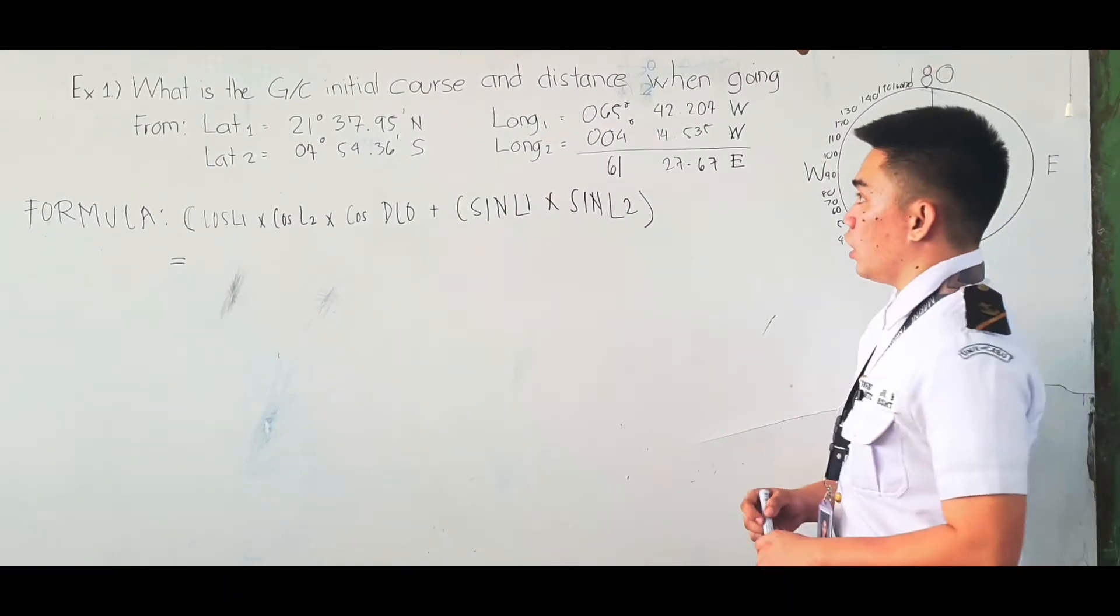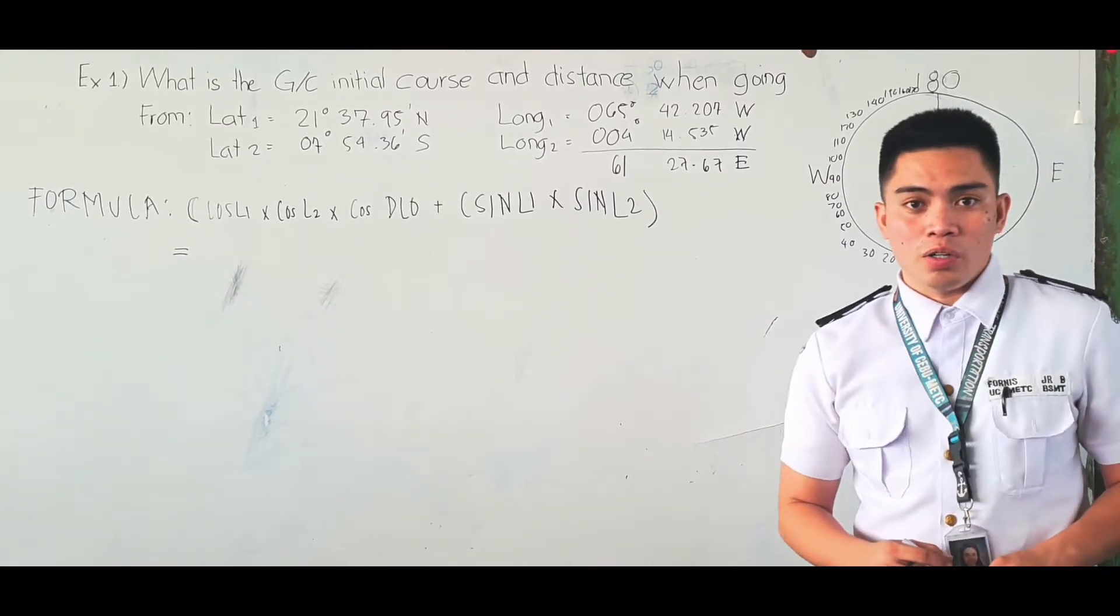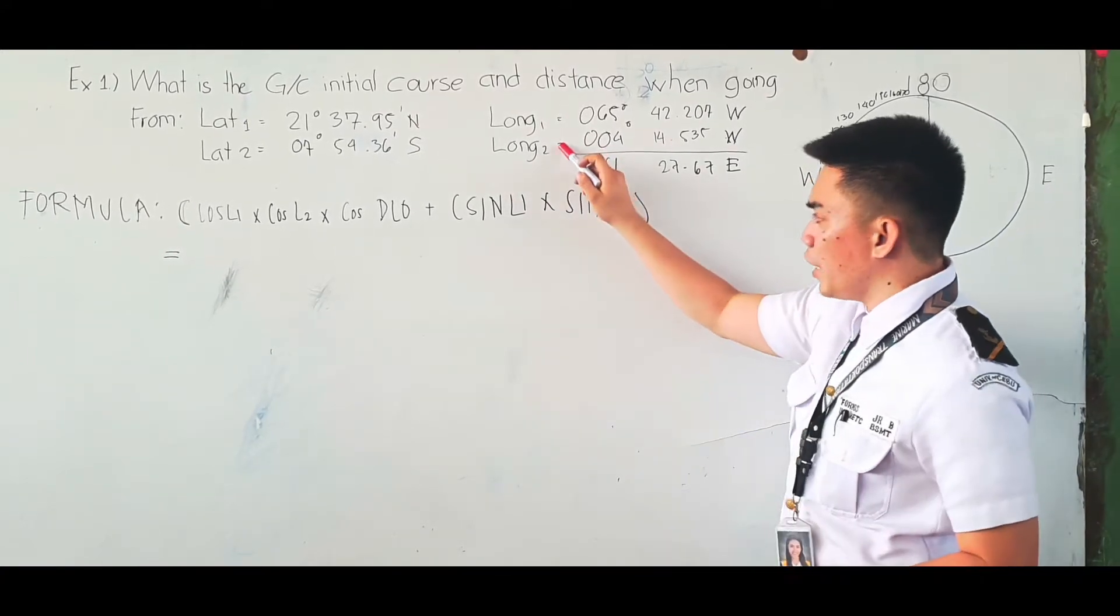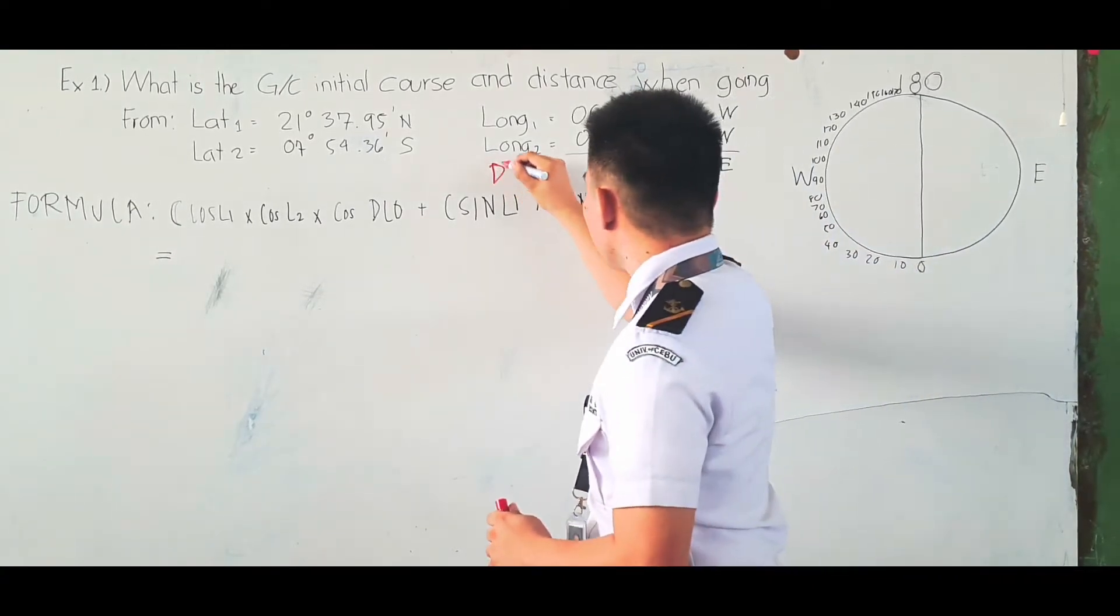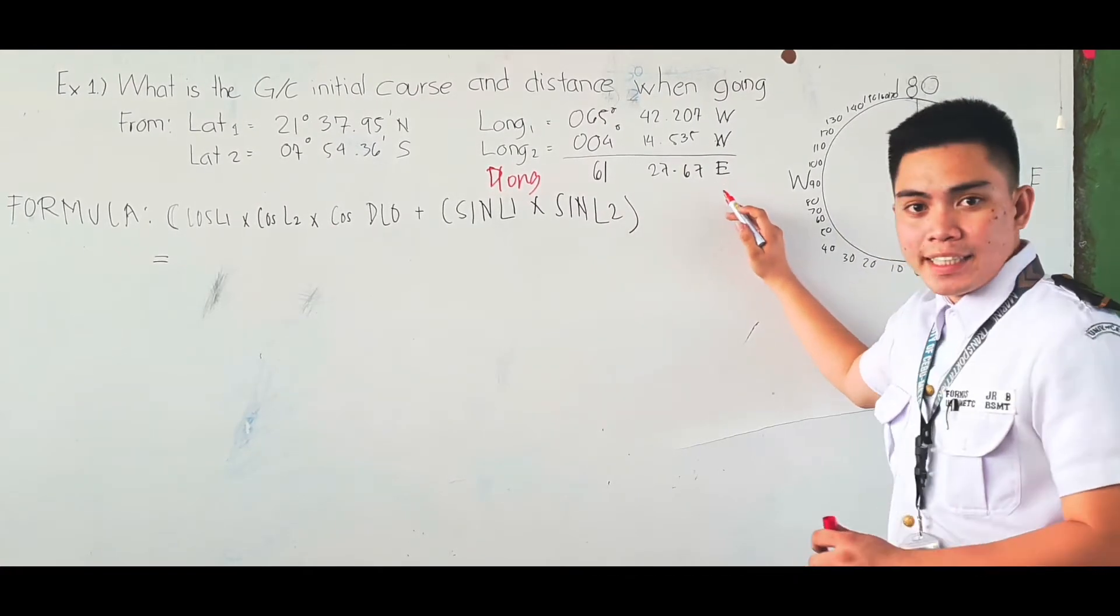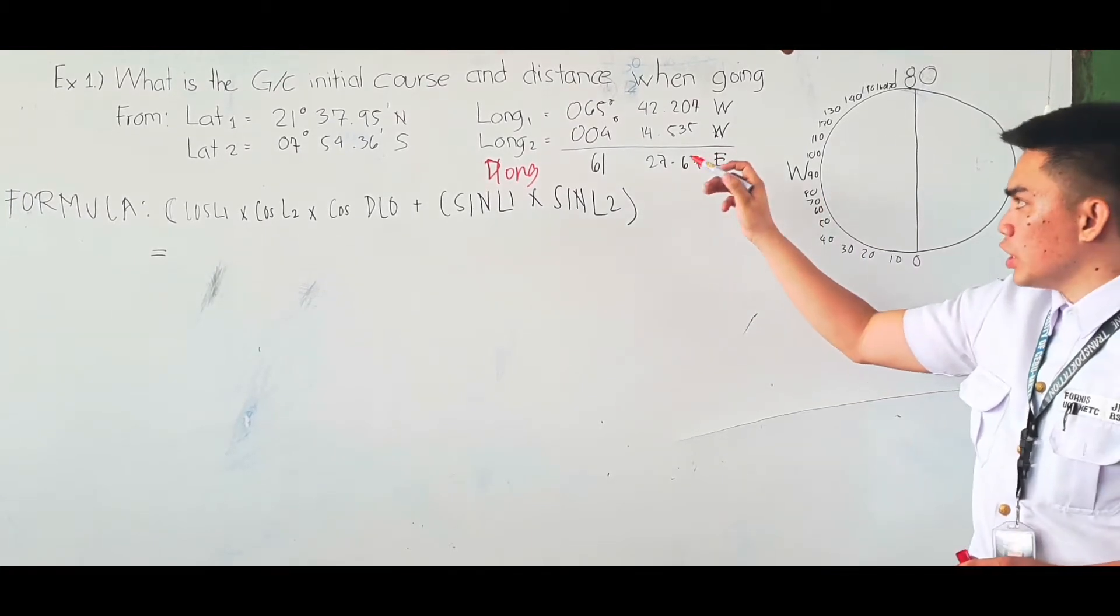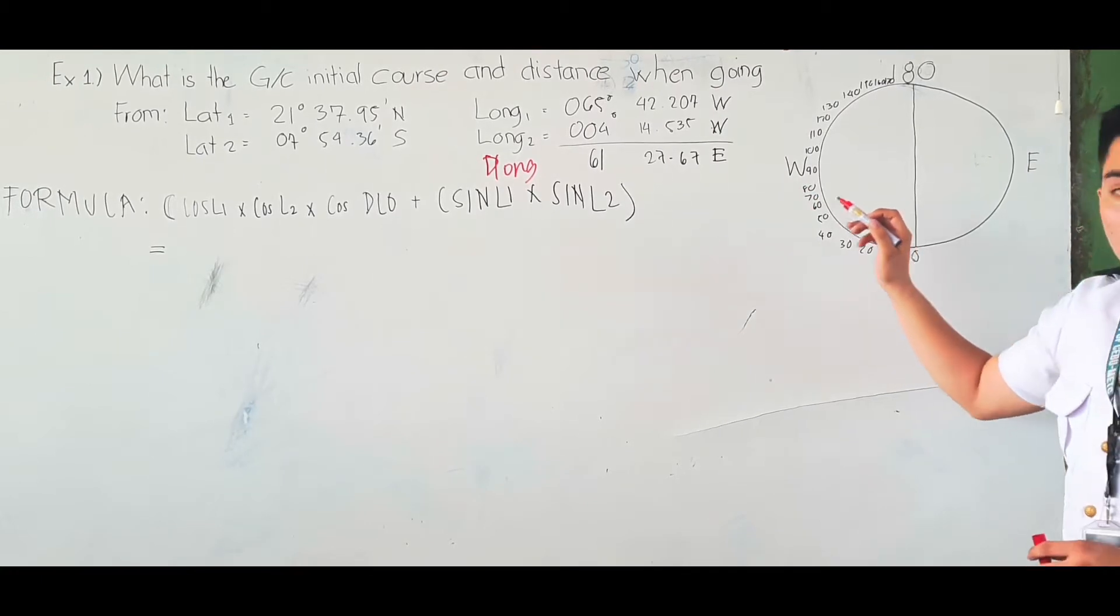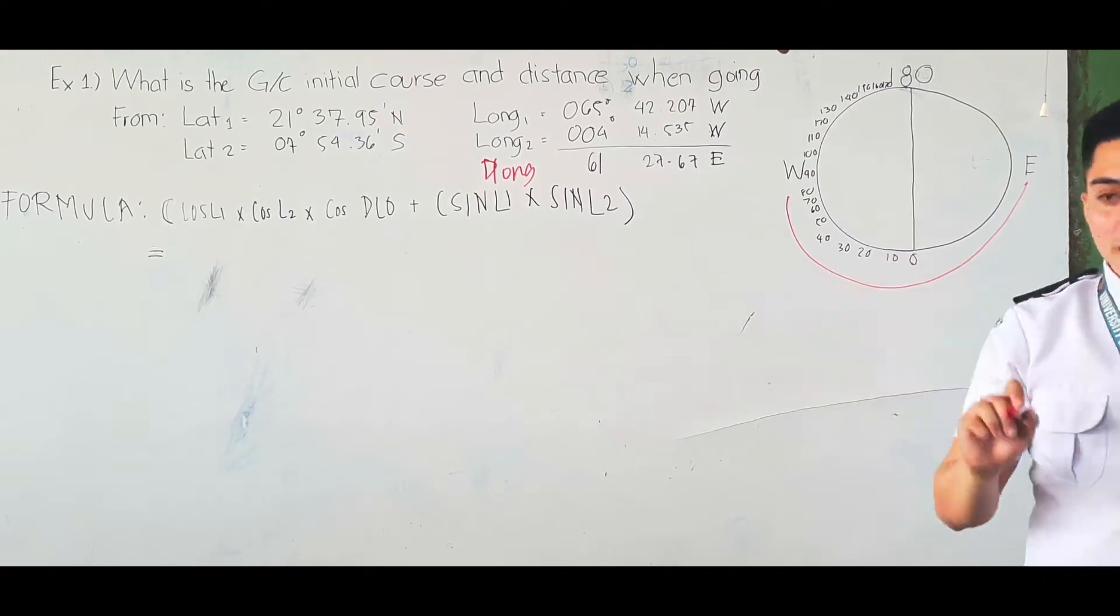In solving the Great Circle Initial Course and Distance, we first calculate the D-long. To get the D-long, you subtract longitude 1 from longitude 2. As you can see, the D-long is 61 degrees 7.67 minutes East. Why East? Because longitude 1 is going to longitude 2, which is eastward. That's why we call it East.